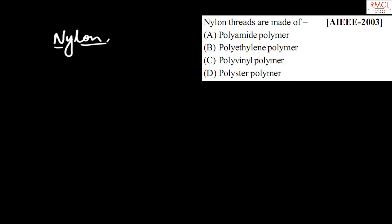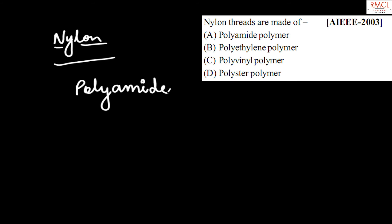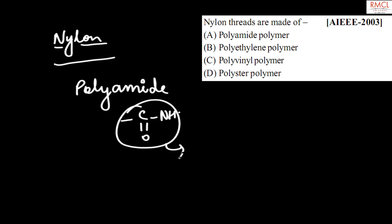The correct option for this question is polyamide polymer, because the CO-NH bond is present in this polymer. That's why these are called polyamide polymers. So the correct answer for this question is option A.